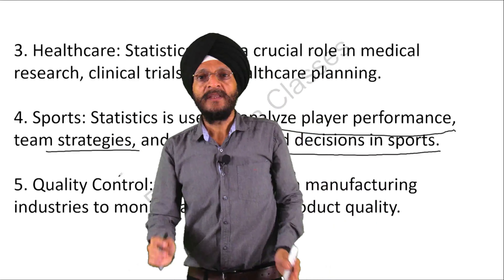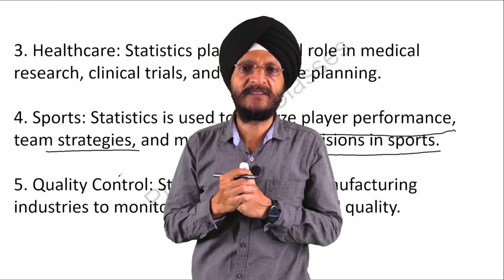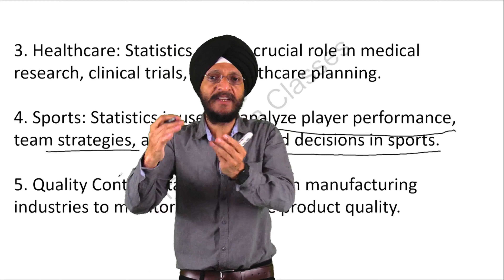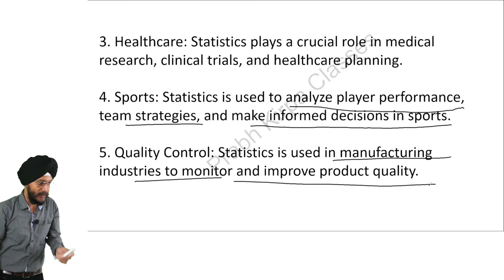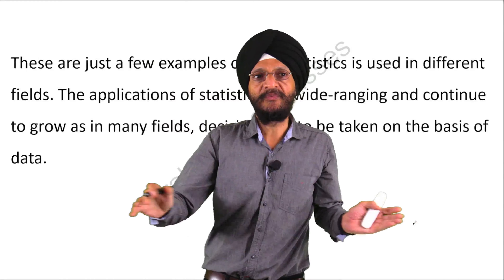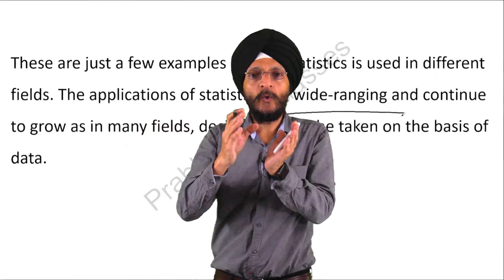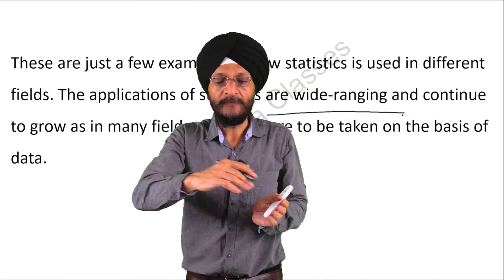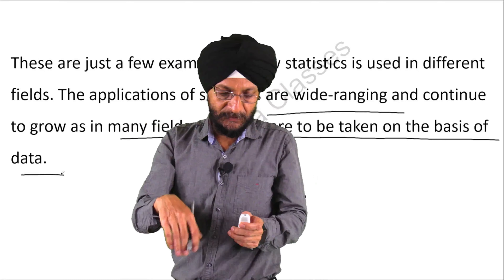In quality control, if a particular brand is receiving many complaints regarding side effects, quality control steps are taken on the basis of statistics. Statistics is used in manufacturing industries to monitor and improve product quality. These are only a few examples of how statistics is used in different fields — the applications are wide-ranging, and the usage of statistics is growing as decisions in many fields are taken on the basis of data.